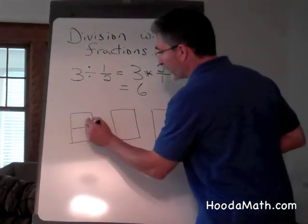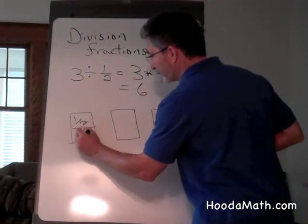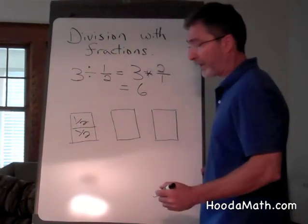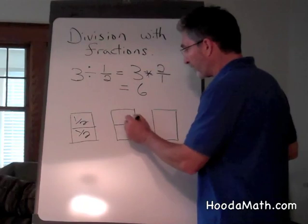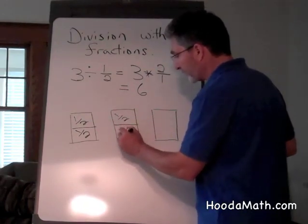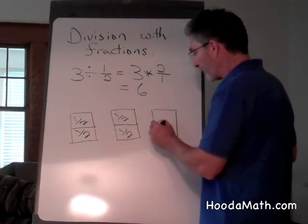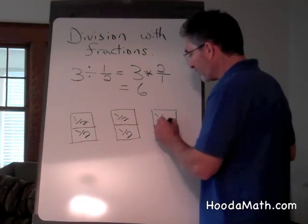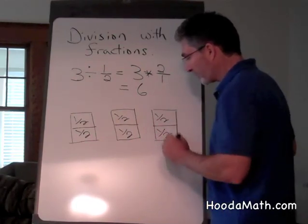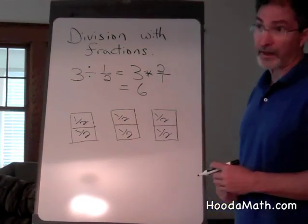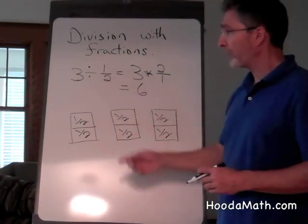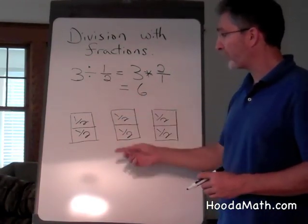I could divide one of the dollars into 2 halves, another dollar into 2 more halves, and the third dollar into 2 more half dollars. So 3 divided by 1 half—how many halves are in 3?